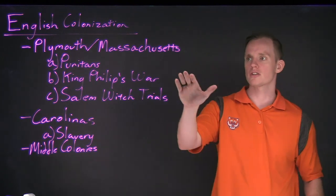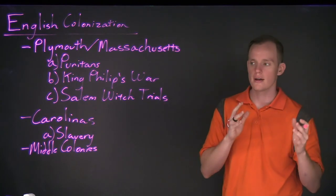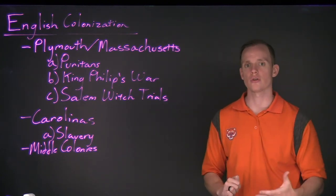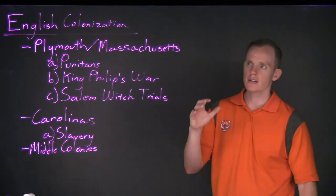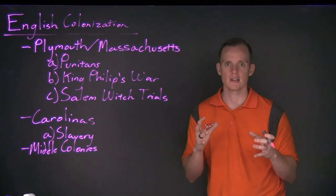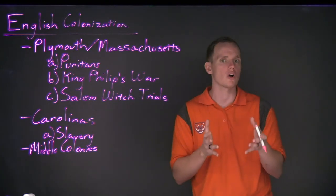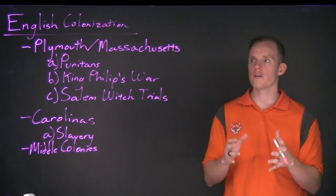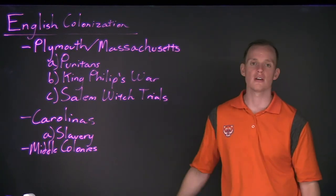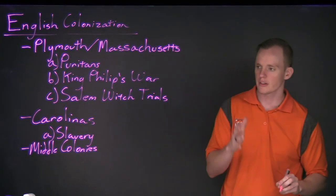New York developed a mixture of the economies found in Massachusetts and the South. Massachusetts, in a cold and rocky region, focused mainly on trade, while the South focused on cash crops like tobacco, rice, and indigo. New York and the Middle Colonies blended both — large cities like New York alongside farms producing crops like wheat. They also developed a significant slave population; New York City's population consisted of 40 percent slaves by the mid-1700s.